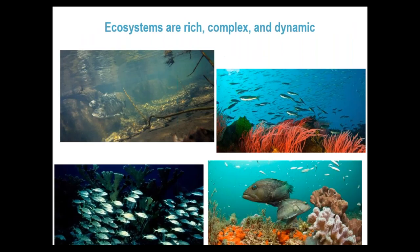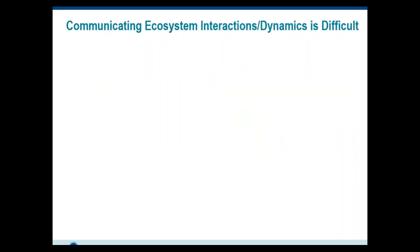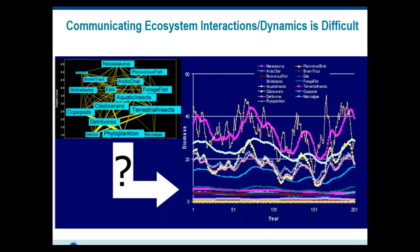People usually have a pretty good understanding of the richness and complexity of ecosystems and are engaged in talking about them. So the move towards ecosystem-based fisheries management should be fairly straightforward. But we find that sometimes communicating about the dynamics and interactions in an ecosystem can be difficult to really distill down. Over the years we've tried some static approaches to visualizing the data from ecosystems, and they've met with mixed results.